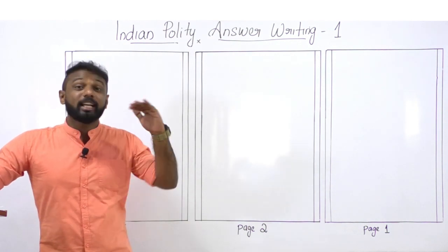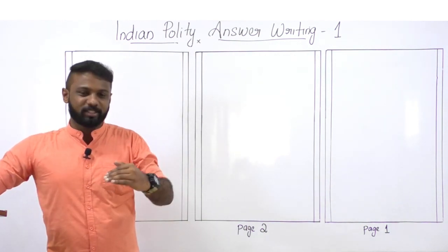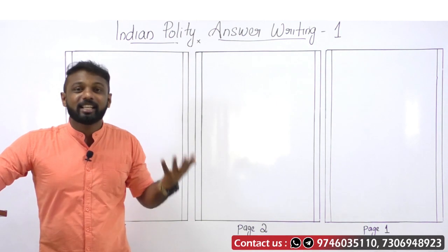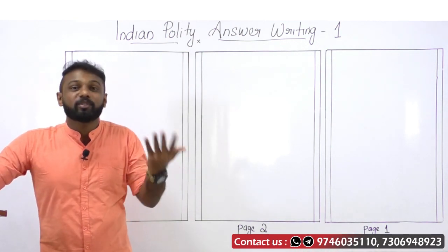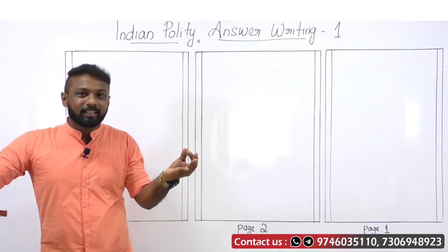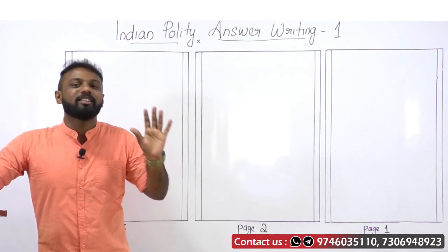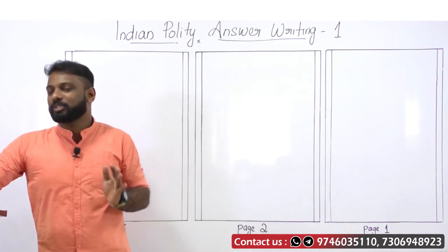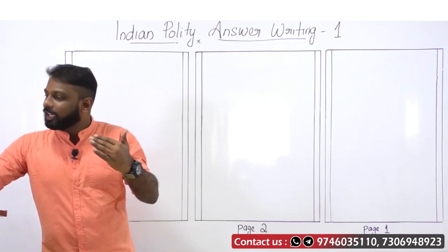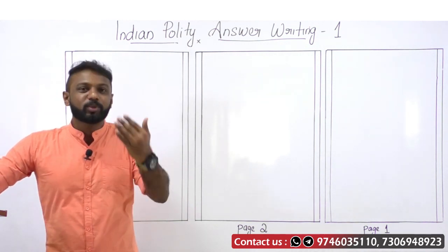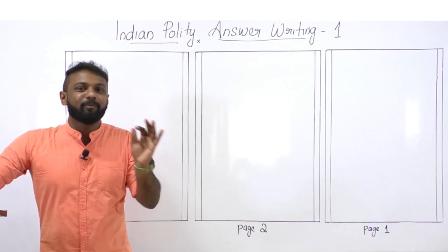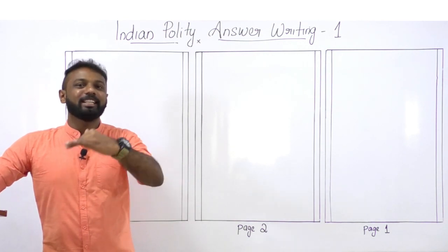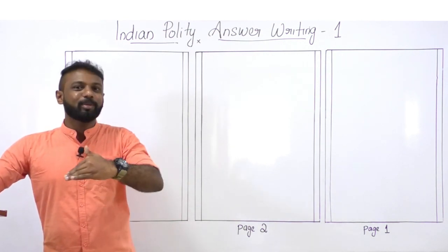In the body part, we must address the federal features of our Constitution — because the question says the federal principle is a basic feature. Then the second part of the question demands that we write those provisions which show a bias towards a strong center, that is, the unitary features of the Indian Constitution.